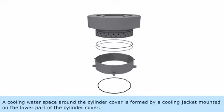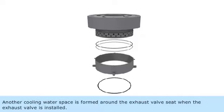A cooling water space around the cylinder cover is formed by a cooling jacket mounted on the lower part of the cylinder cover. Another cooling water space is formed around the exhaust valve seat when the exhaust valve is installed.